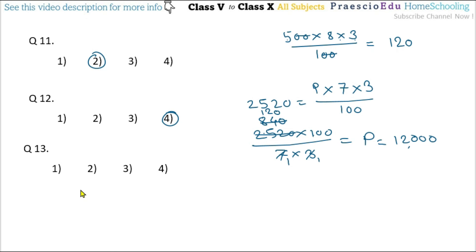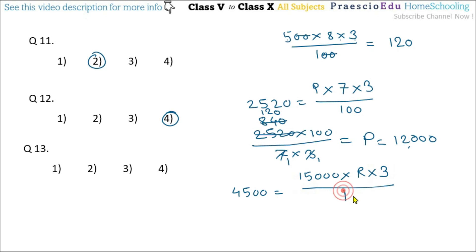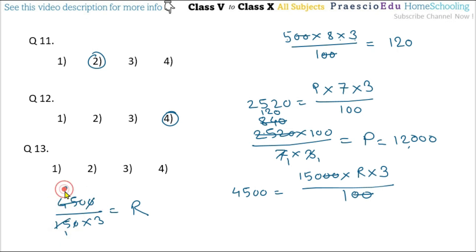Question number 13: Rahul lent ₹15,000 to Subash for 3 years. Subash gave Rahul ₹4500 as interest. What was the rate of interest? So 4500 = 15000 × R × 3 / 100. The two zeros cancel, giving 4500 / (150 × 3) = R, so R = 10% per annum — option number 1 is correct. Thank you.